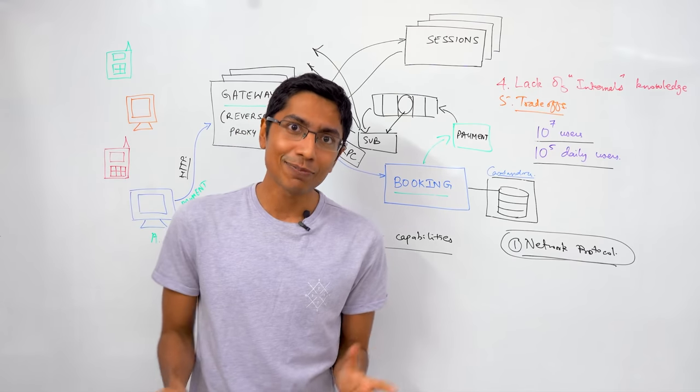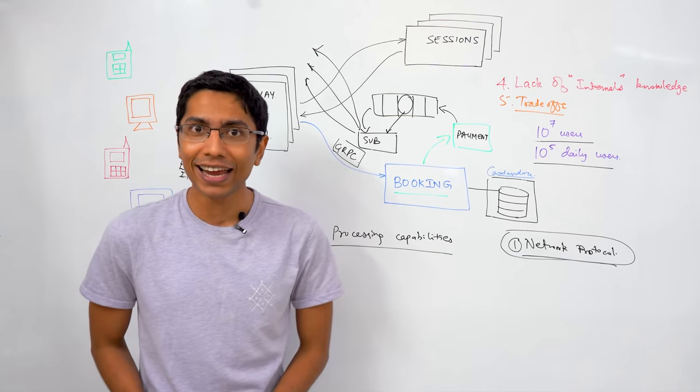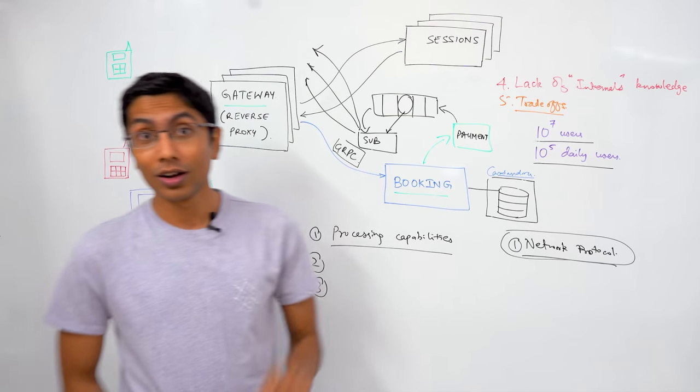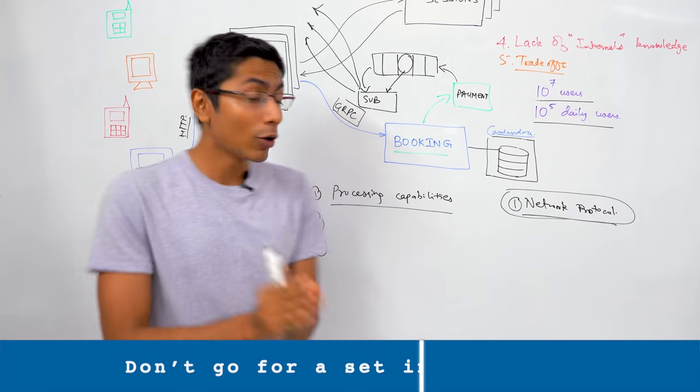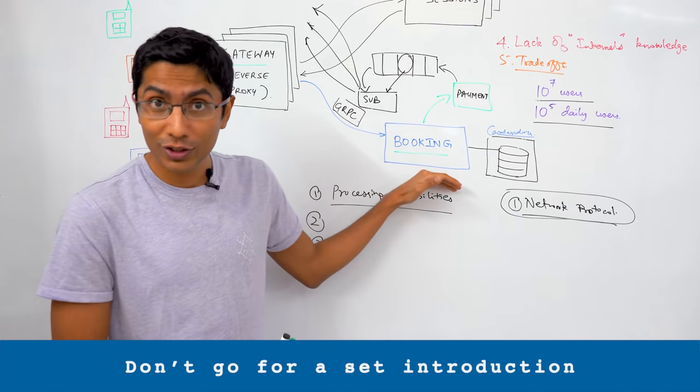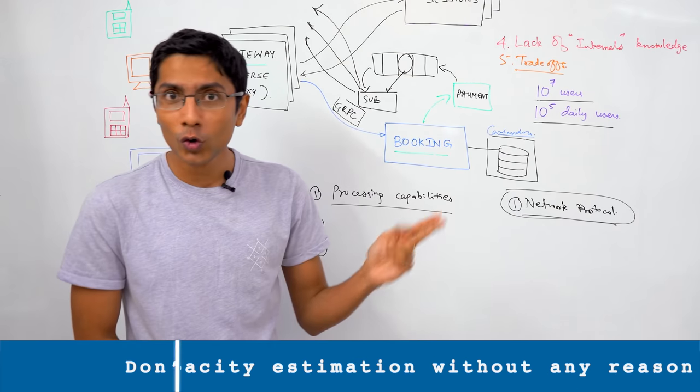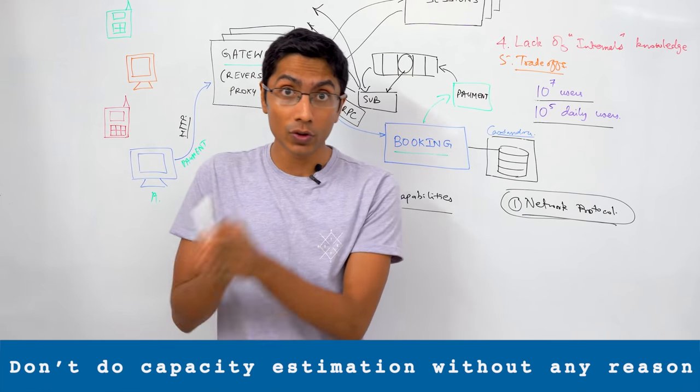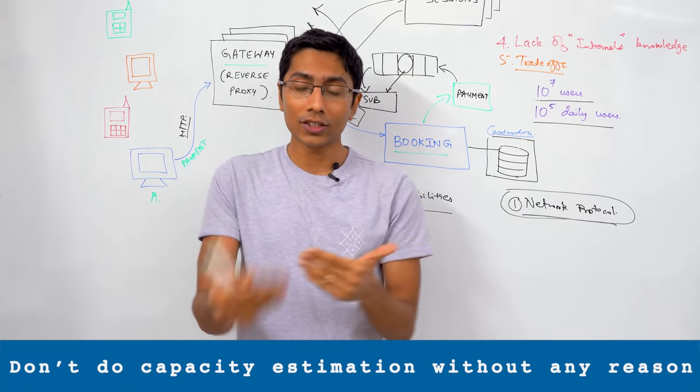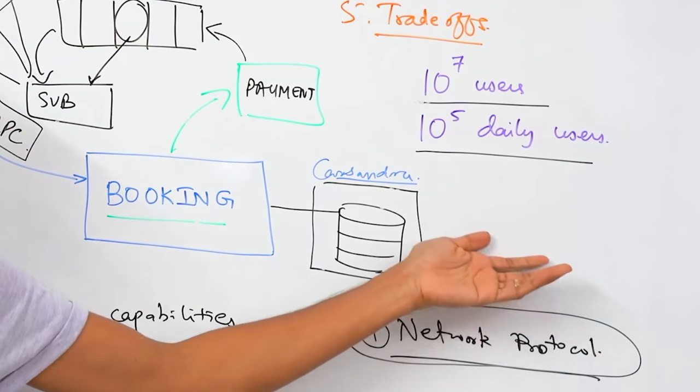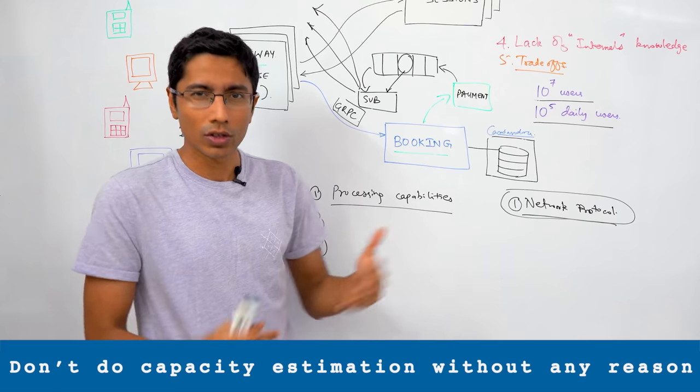So these are six points that I'd like to highlight before you head to a system design interview. The things to remember: Number one, make sure you don't go for a fixed intro. Focus on the core of the system. Point number two, don't go for capacity estimations without any purpose, without any reason. Do exchange your concerns with the interviewer before you head to something like that, because it may not be necessary.